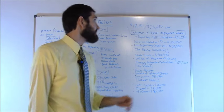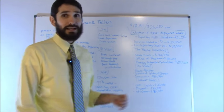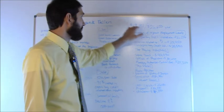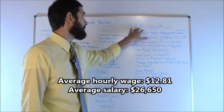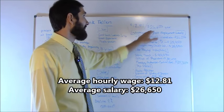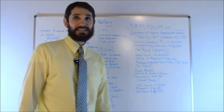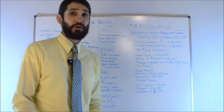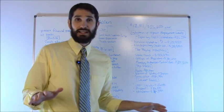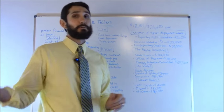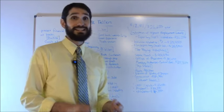Now let's talk about salary statistics. How much money does a bank teller earn on average? Well in the United States the average hourly wage was $12.81. The average salary $26,650 per year and those are just averages across the whole United States. Some people make more, some people less.